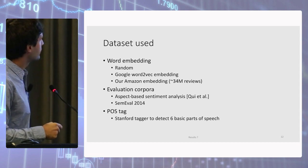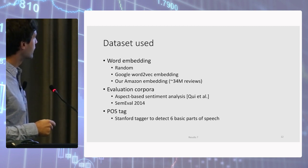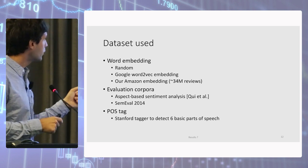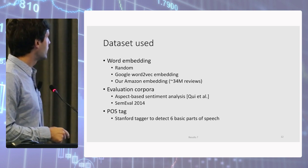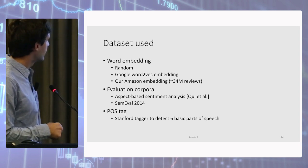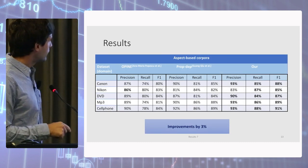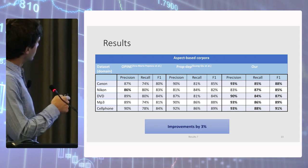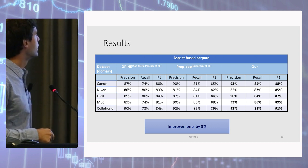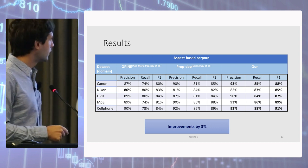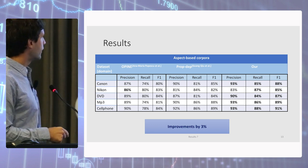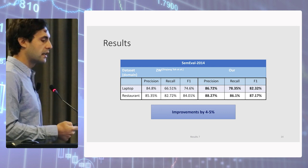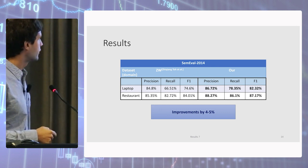The first dataset is the aspect-based corpora. We compare our results with OP9 and DoubleProb, two models that try to leverage the relation between opinion words and opinion target words. We are almost able to outperform them in every subdomain — Canon, Nikon, DVD, MP3, and cell phone — except for Nikon. But looking at the F1 score, which is an average between precision and recall, we have an improvement of 3%. On SemEval, we compare with the ZW algorithm, a conditional random field algorithm, and we got an improvement of about 4–5%. We believe this higher improvement is due to the fact that this dataset is bigger, so the deep neural network can leverage much more information and build a much better model compared to traditional machine learning algorithms.